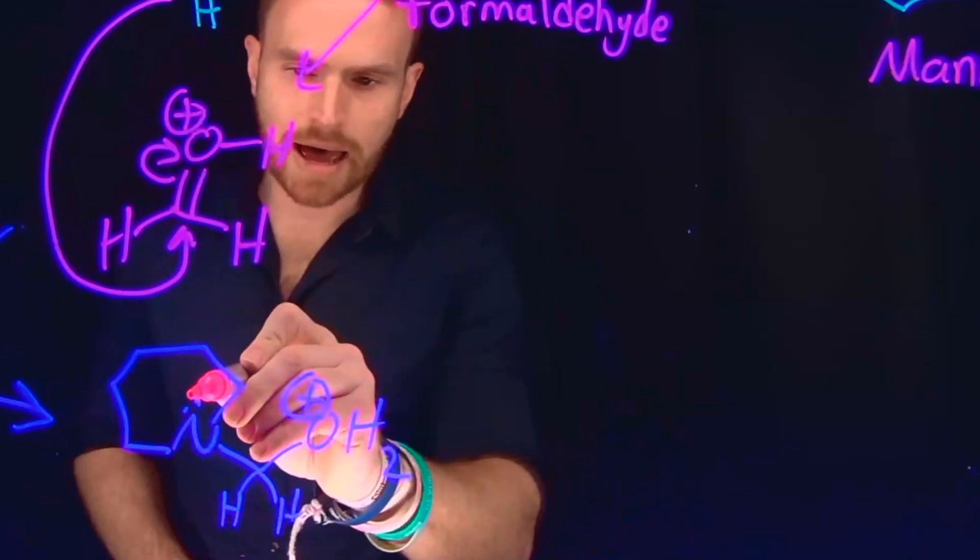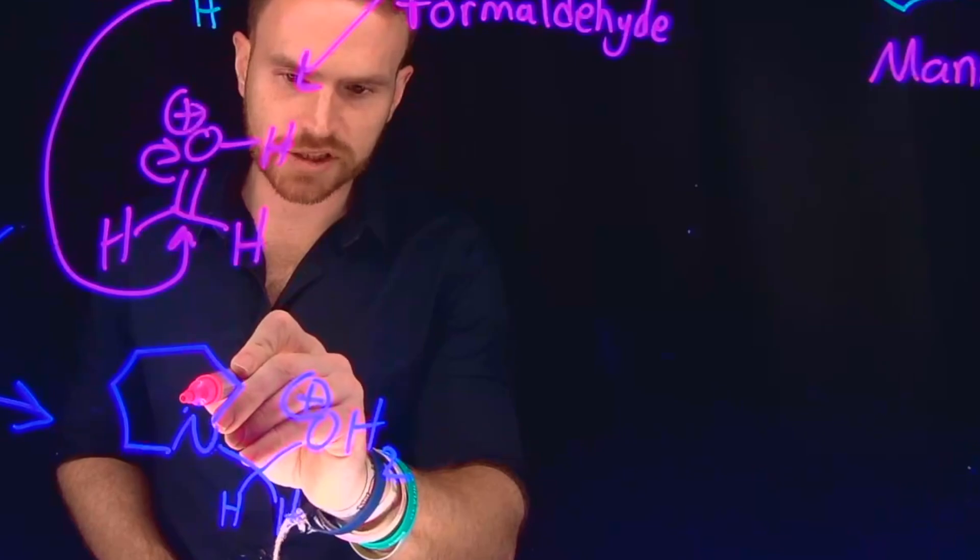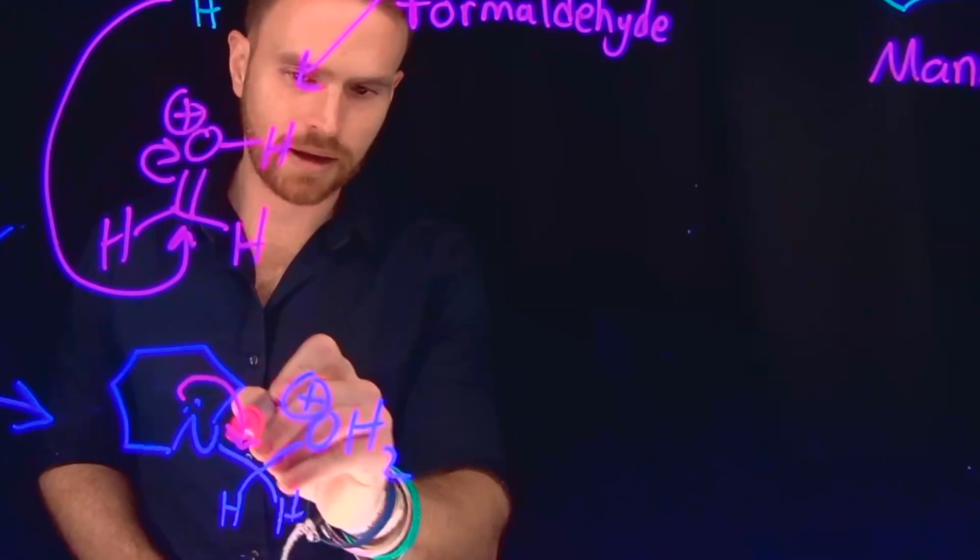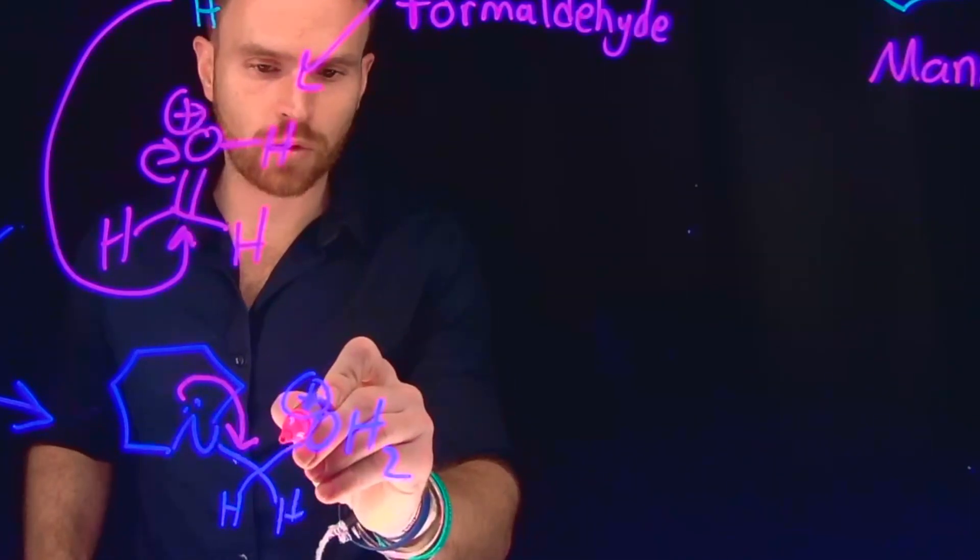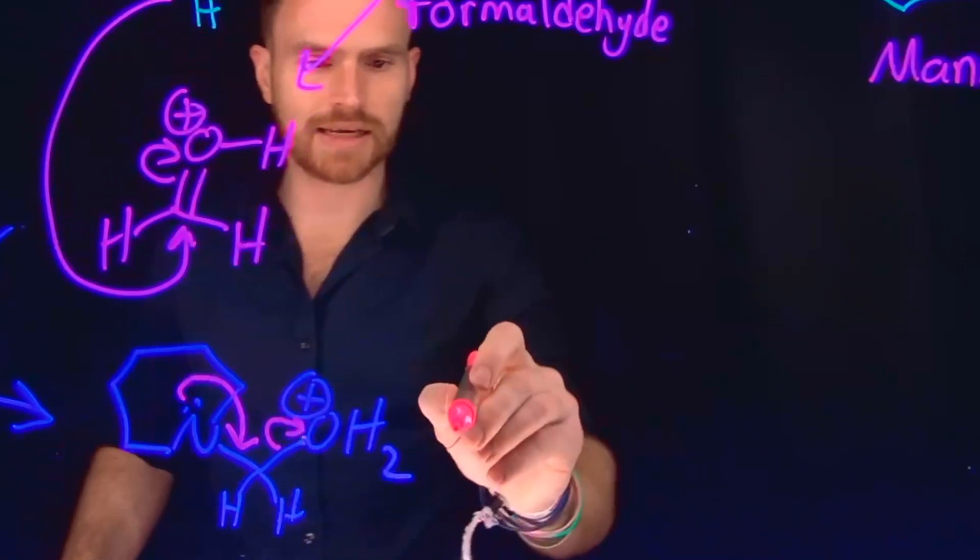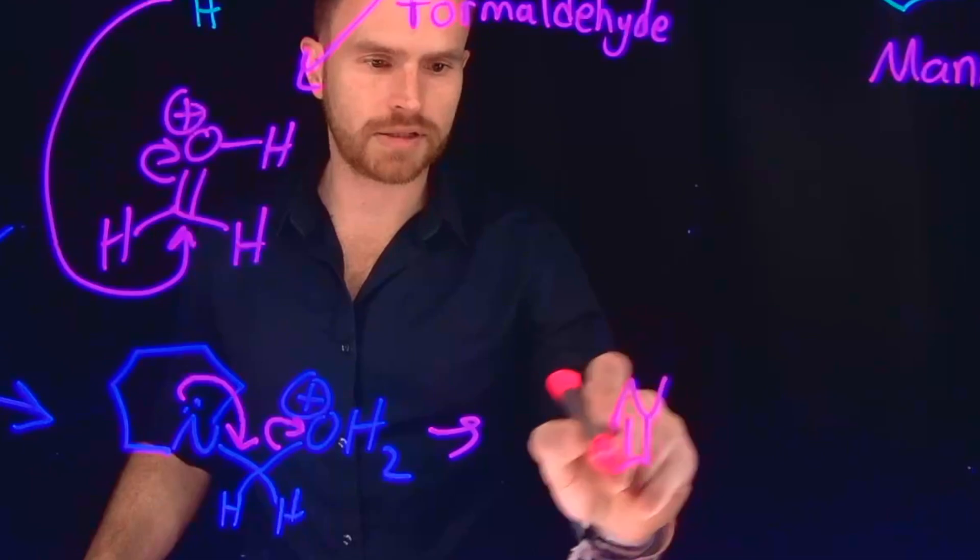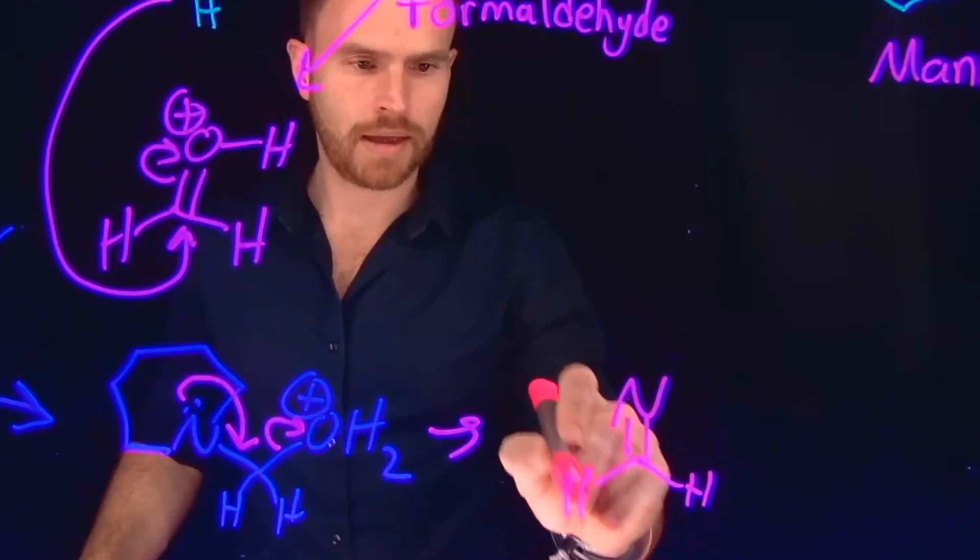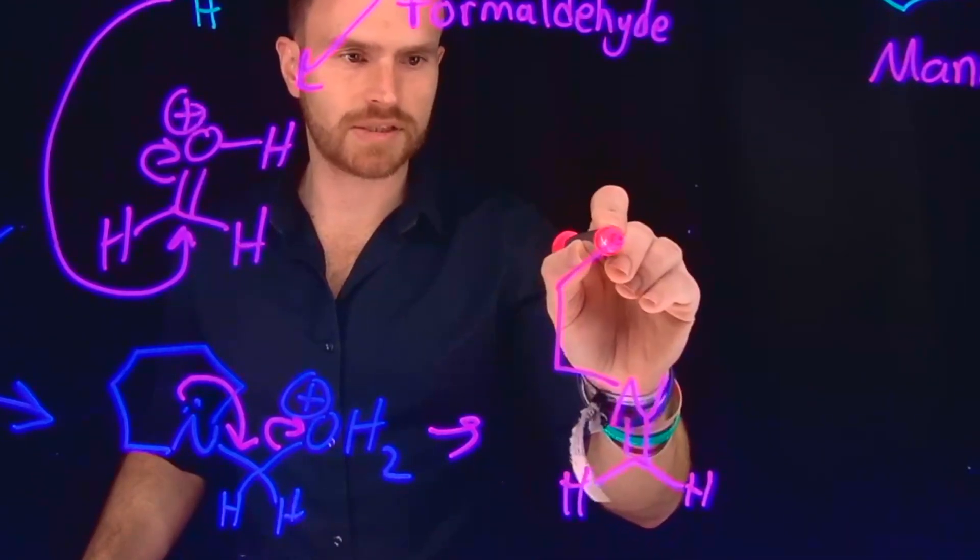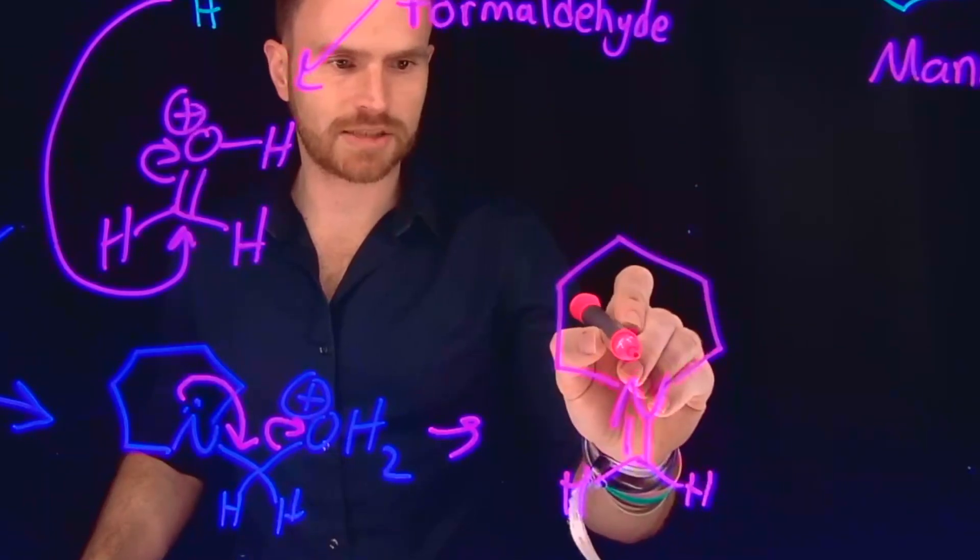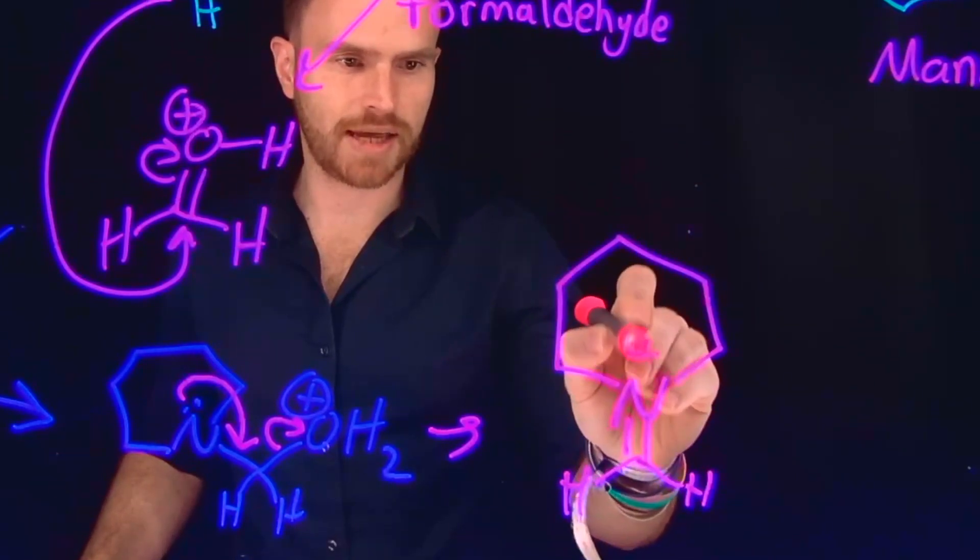And that's exactly what will happen where these lone pair of electrons on nitrogen will come down to form a new imine or iminium ion. And it will kick off water as a leaving group, giving us a new nitrogen to carbon double bond and leaving us with the rest of this original piperidine six-member ring. But now this nitrogen is again positively charged.